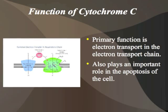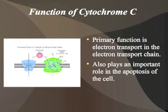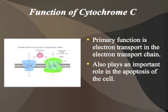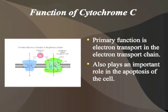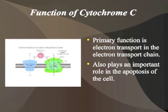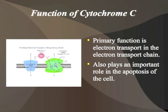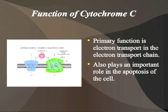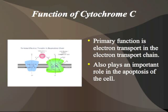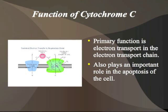Its secondary role is involved in the death of the cell, specifically apoptosis — the planned cell death. It causes a positive feedback loop when it is released from the mitochondria. It causes release of calcium from the endoplasmic reticulum, forming a positive feedback loop leading to cytotoxic levels of calcium in the cell, which causes eventual cell death.